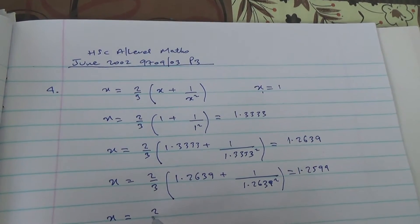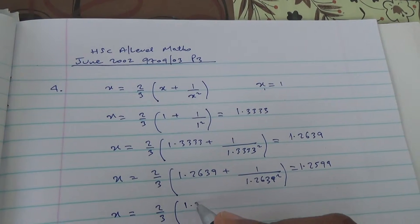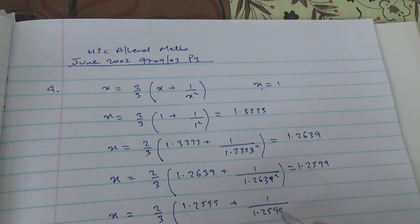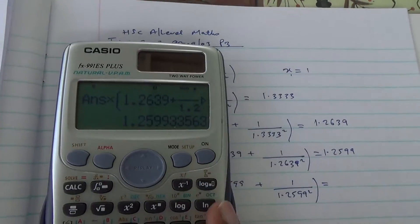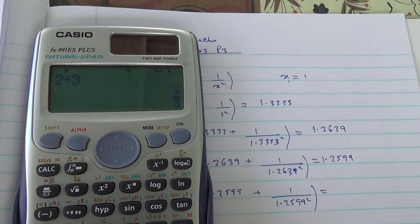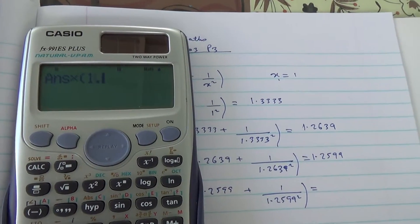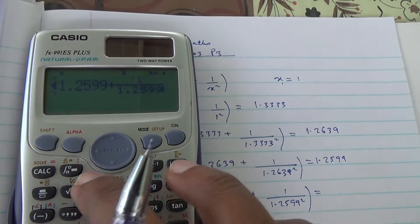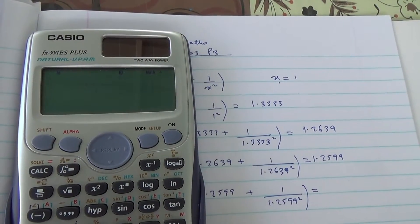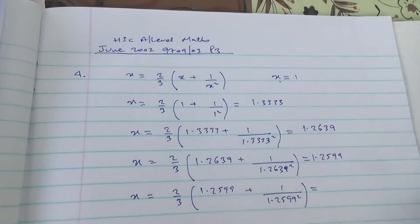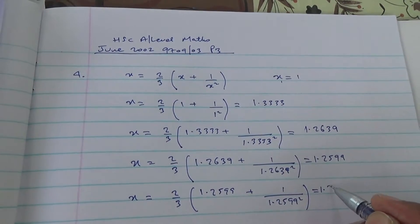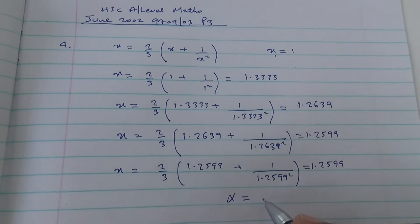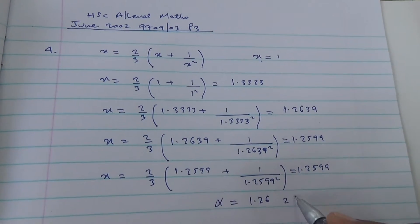We've got x is equal to 2 thirds 1 point 2, 5, 9 plus 1 over 1 point 2, 5, 9 squared, and it's going to give us 1.25 double 9 again. So it looks like now we are confident to see that this converges to 1.26 to 2 decimal places.